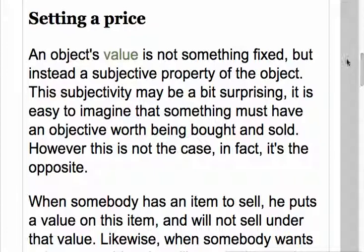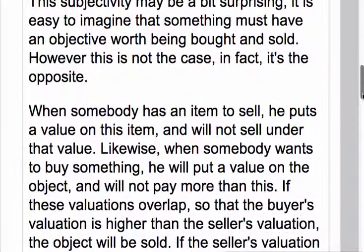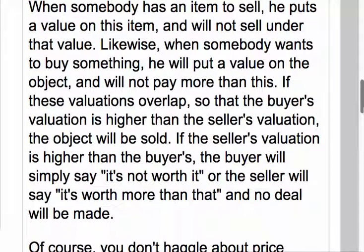When somebody has an item to sell, he puts a value on this item and will not sell under that value. Likewise, when somebody wants to buy something, he puts a value on the object and will not pay more than this. If these valuations overlap — so that the buyer's valuation is higher than the seller's valuation — the object will be sold.